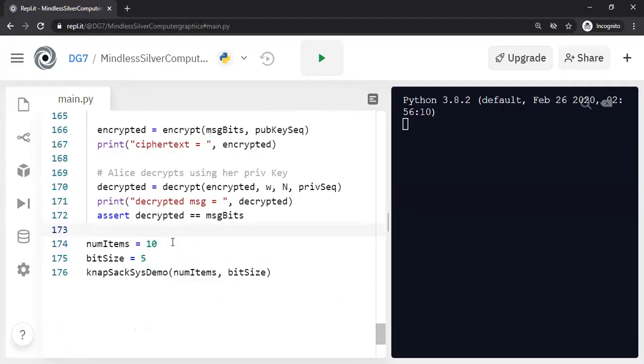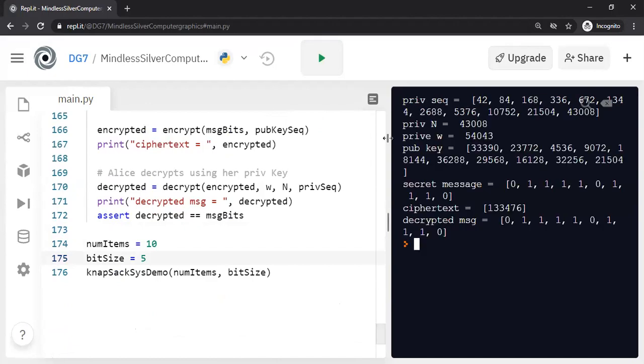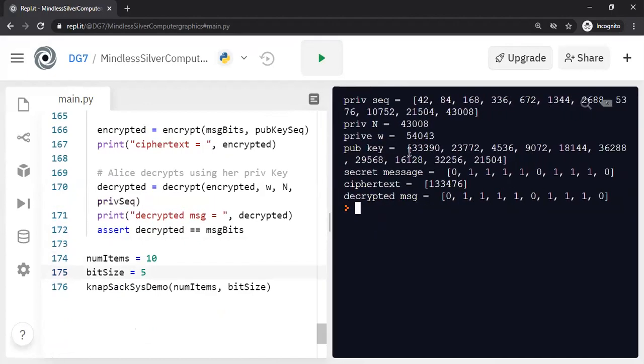Knapsack with 10 items and our private sequence will start with a 5-bit number and then it will become a 6-bit, 7-bit and so on. You will have a super increasing sequence. That's the basic idea of this knapsack construction. Let me run it and show to you. So I said I need 10 items. Remember the capital N is the 11th item.